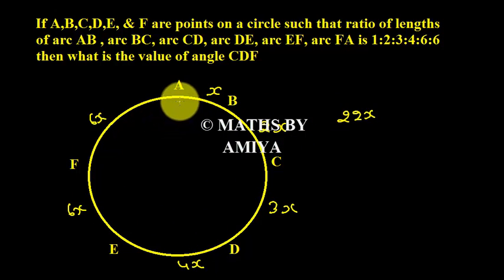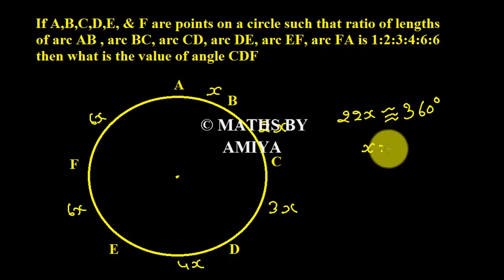The total arc is nothing but the perimeter, and we know the perimeter or the complete circle makes angle 360 degrees at center. So total arc or 22x is 360 degrees, so we can say x is 360 degrees upon 22.